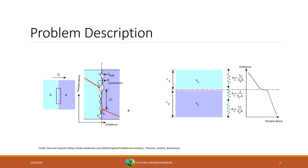The thermal contact resistance value is going to be dependent on the two materials in contact — material A and material B — as well as the contact pressure between those materials. Looking at the example on the right in an electrical equivalent, we can see our thermal resistance as temperature moves through our initial solid, which is K2. As we hit the contact between K2 and K1, we see the resistance from our thermal contact resistance, and as we move into K1, we get our thermal resistance through the top solid.